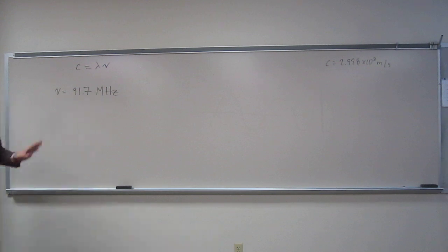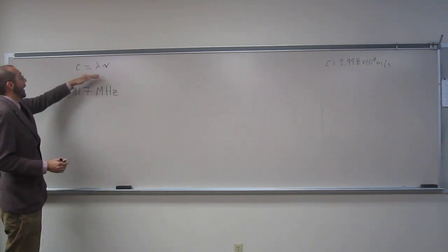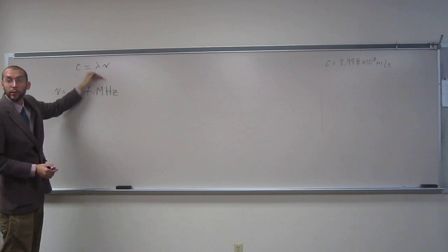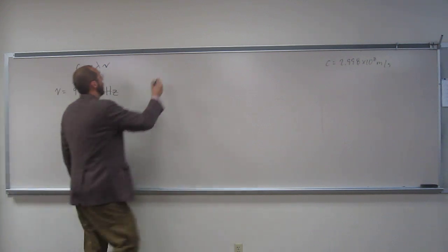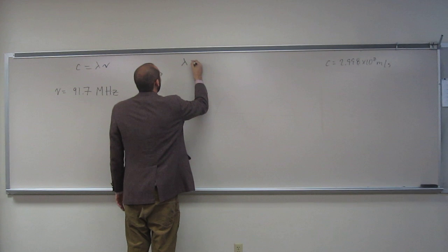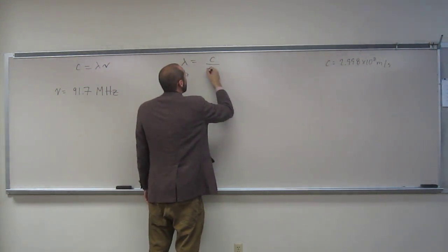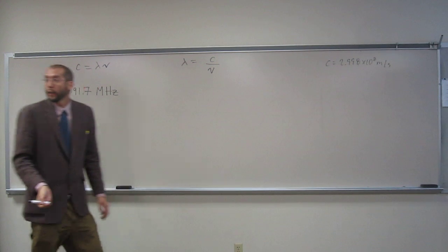So how do we do this? We're going to have to solve for wavelength, right? So we're going to have to manipulate this equation algebraically. When we do that, we know that wavelength is going to be C divided by nu.